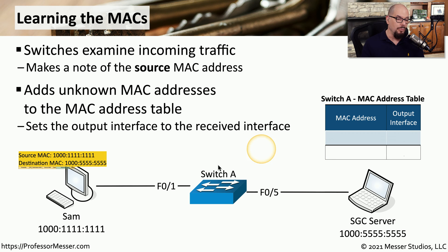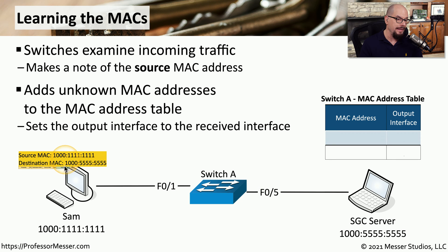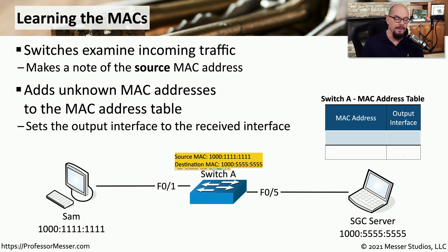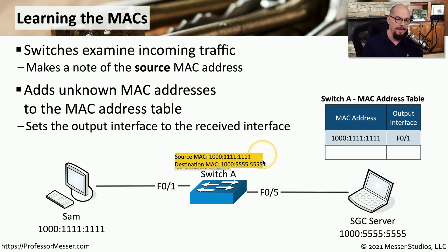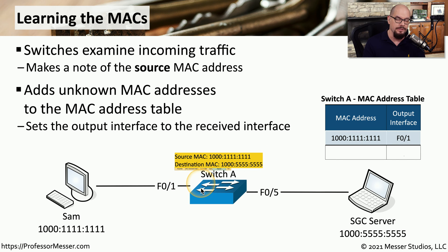SAM is sending information to the SGC server. SAM's MAC address is 1000 in all 1s, and the SGC server's is 1000 in all 5s, so we can see the source MAC and destination MAC listed in that frame. When that frame is received by the switch, it notices the source MAC address is not in the table, so it makes a note that traffic for that MAC must come from interface F0/1. The MAC address table now shows SAM's device on fast ethernet 0/1.